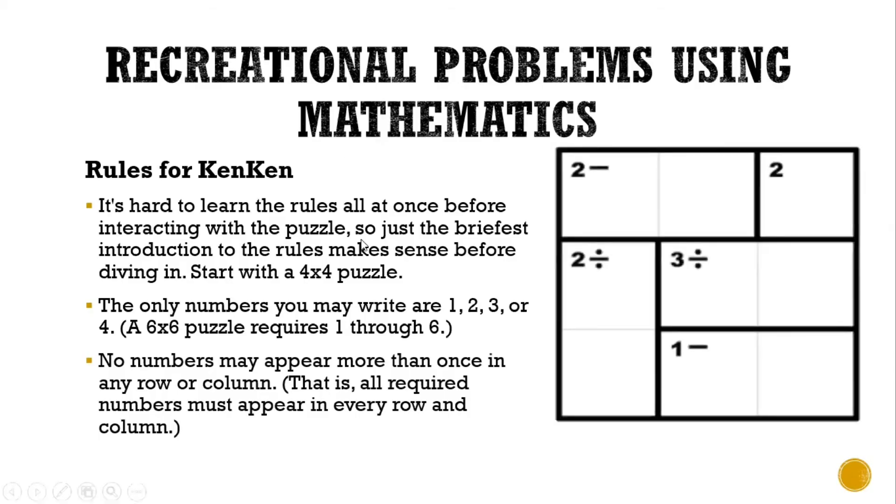In our example, since we have a 3x3 KenKen Puzzle, we're just going to use the numbers from 1, 2, and 3. There should not be a number that appears twice in a column, so they need to be different numbers. From 1 to 3 in each row and column. In a KenKen Puzzle, it's okay to have repeating numbers diagonally, but in every row and in every column, there should not be a repeating number.